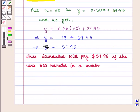Which further implies that y = 57.95. Since y denotes the monthly cost of plan, we can say that Samantha will pay $57.95 if she uses 560 minutes in a month.